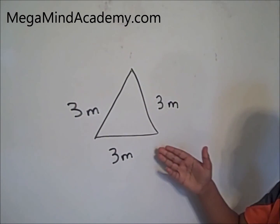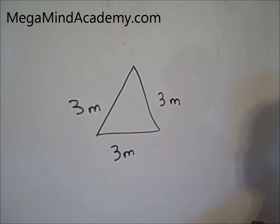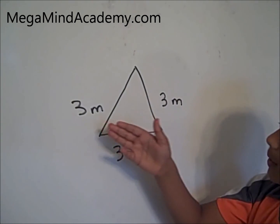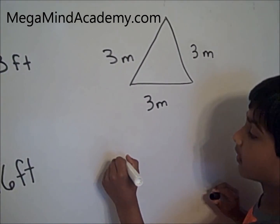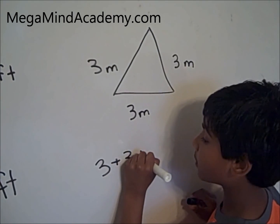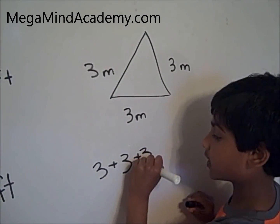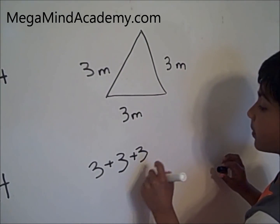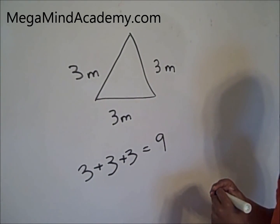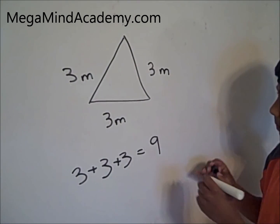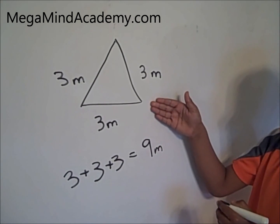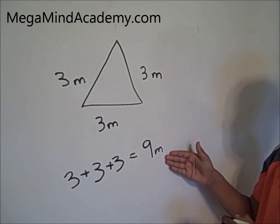Meaning 3 plus 3 plus 3. Let's write that down. 3 plus 3 plus 3 equals — 3 plus 3 is 6, plus 3 equals 9. The parameter of this triangle is 9 meters.